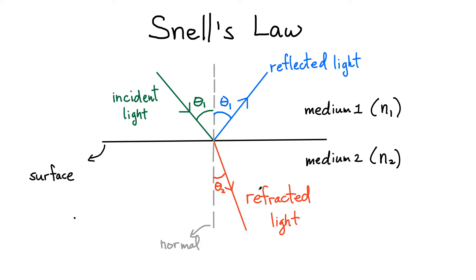Refracted is just another word for saying that light will bend. Notice that if I continue this green line here in a straight line, it doesn't continue along a straight line. I can see that this red light ray here was drawn at a different angle. Whenever you have a change of index of refraction, you're going to have a different angle.